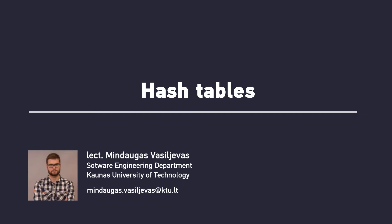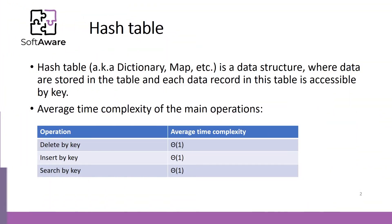In this lecture we are going to talk about hash tables and hashing. A hash table, also known as dictionary or map, is a data structure where data are stored in the table and each data record in this table is accessible by key.